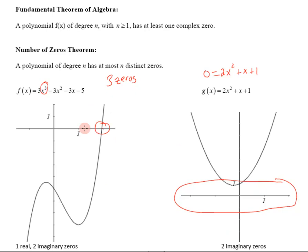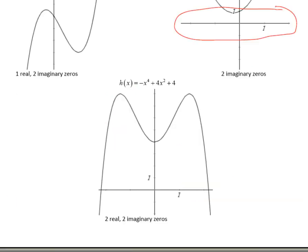So, crossing the x-axis, real zeros, not crossing the x-axis, imaginary zeros. Let's look at this one here, 4th degree, 4 zeros, right? And it looks like a regular 4th degree, nice and symmetric and everything. But, 1 zero, 2 real zeros, and what are the other 2? They're imaginary, 4 zeros total.